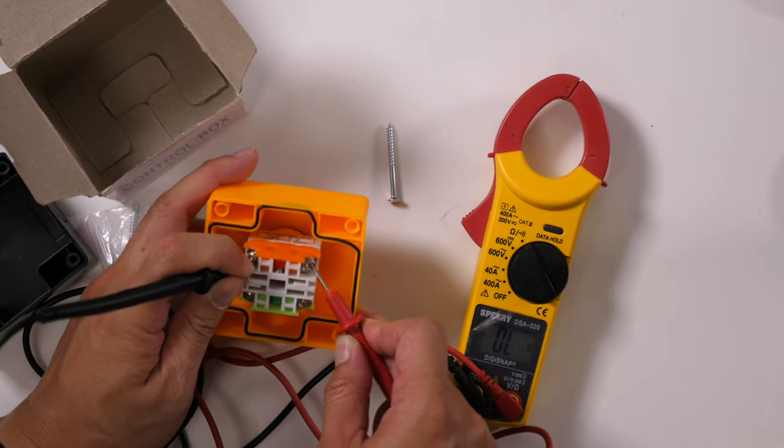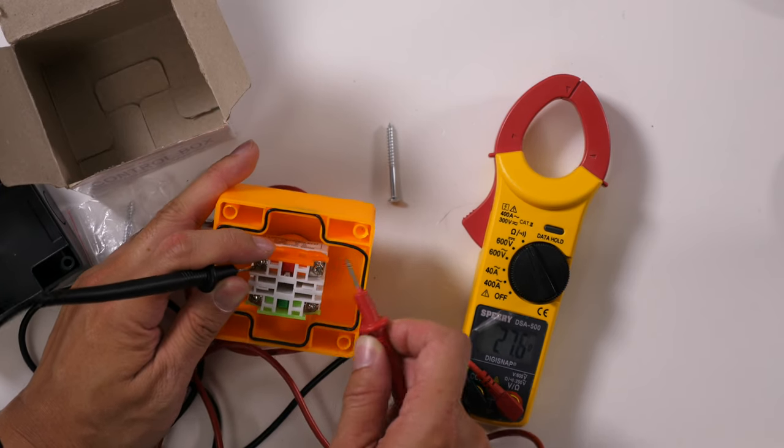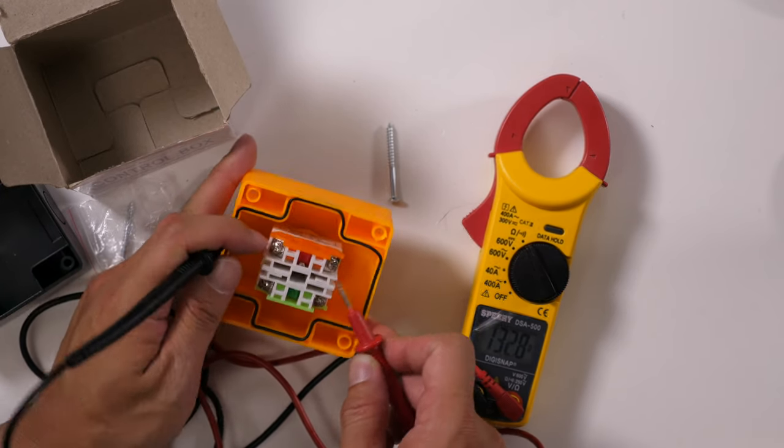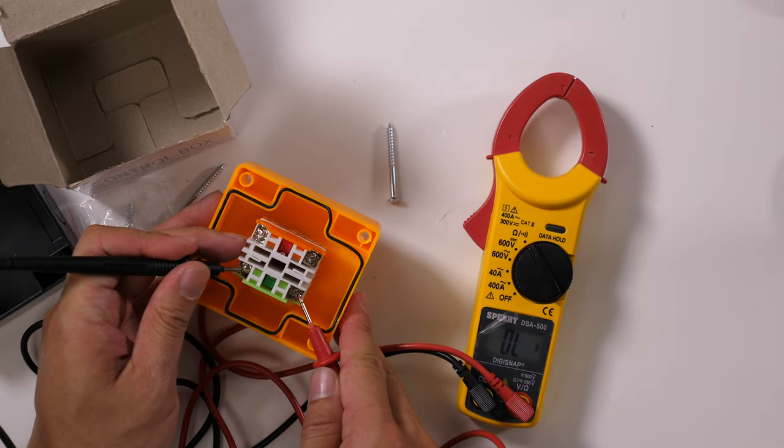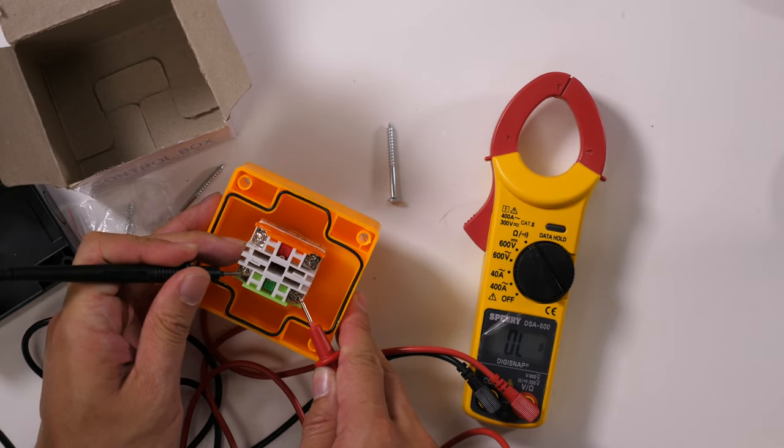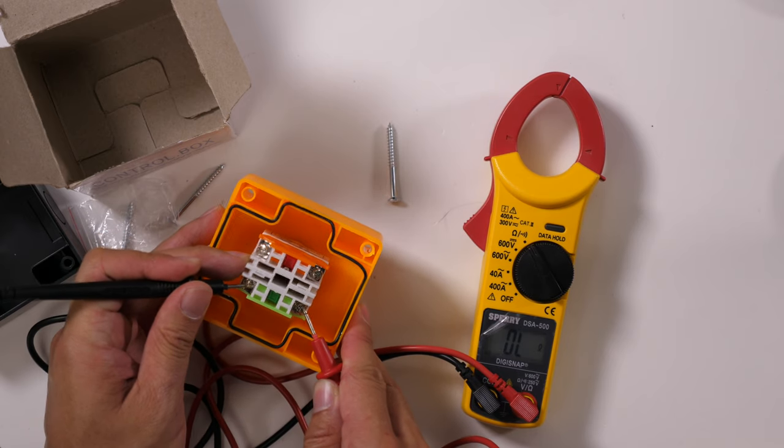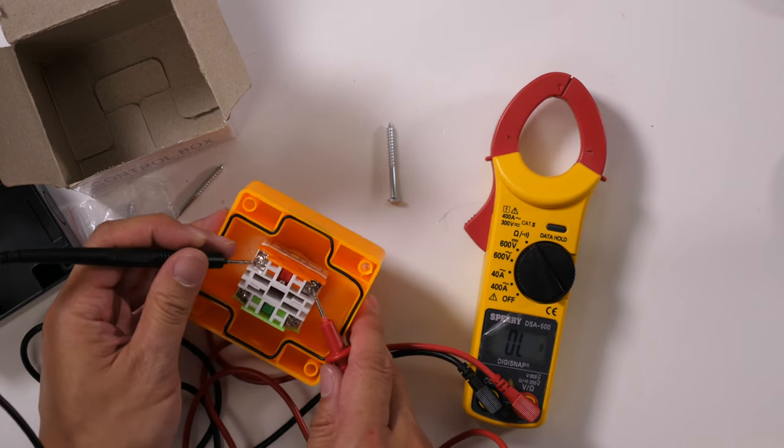That is normally closed. Let's test the green side. Green is normally open and orange is normally closed.